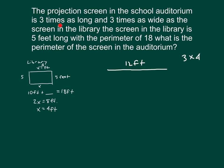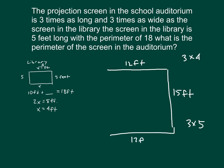Now for the length, it says three times as long as five feet — three fives — so three times five is fifteen feet. The opposite side would be twelve feet, and the opposite length side would be fifteen feet. This is the projection screen within the auditorium — the school auditorium screen.